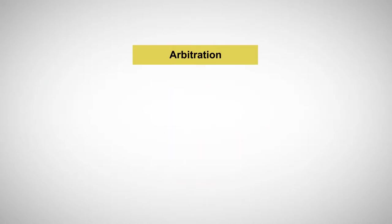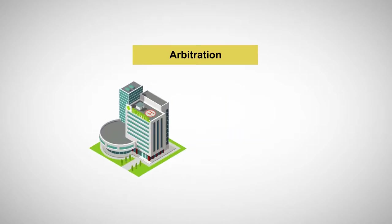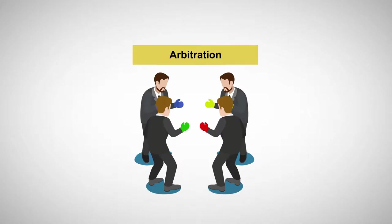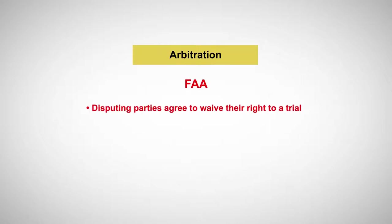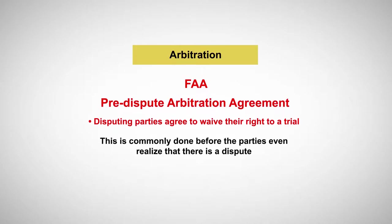Arbitrations can run the whole gamut of dispute resolution. For example, they can resolve disputes between two large sophisticated businesses, two or more insurance companies, a dispute between a large corporation and a consumer, and even disputes between two or more individuals. Under federal law, arbitration is both permitted and even encouraged, as evidenced by the Federal Arbitration Act. Under this law, disputing parties agree to waive their rights to a trial. This is commonly done before the parties even realize that there is a dispute, and such an agreement is referred to as a pre-dispute arbitration agreement.